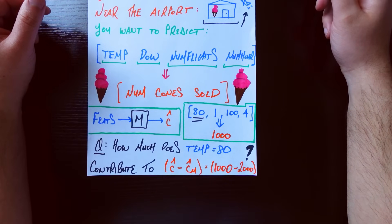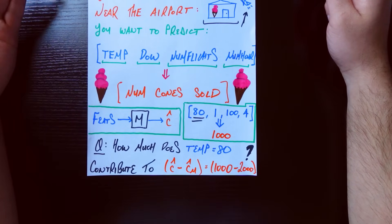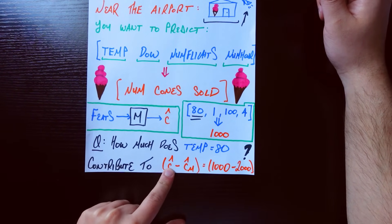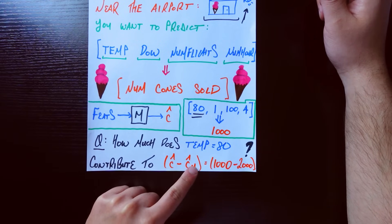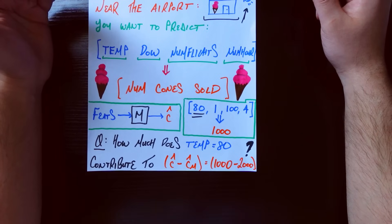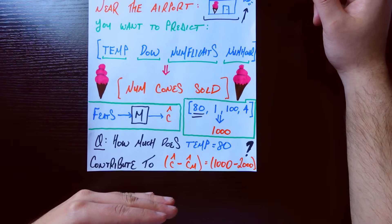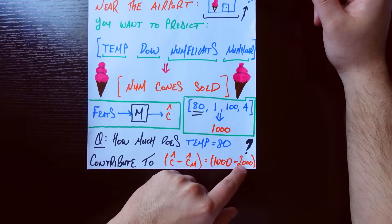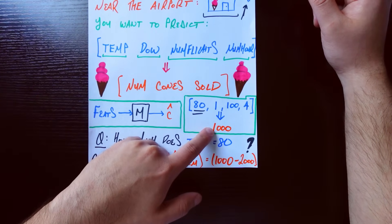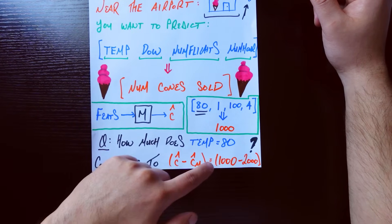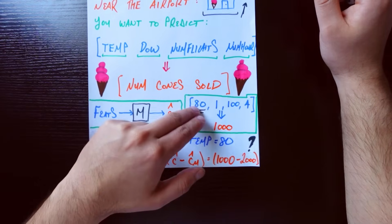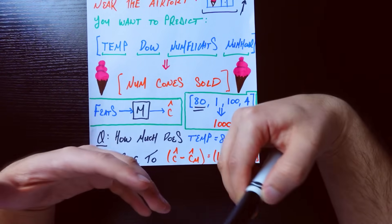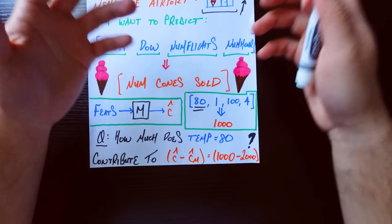Let me break that down. Let's focus on just one feature — let's say we're trying to figure out how much does the fact that temperature equals 80 degrees Fahrenheit contribute to the difference between this prediction of 1,000 and the average prediction, which let's say is 2,000. There's some underlying dataset behind the scenes used to train this model; if we run it on every sample in that data frame, the average predicted cones is 2,000. So where is that discrepancy of negative 1,000 coming from? Each feature is partially responsible, and we'd like to know how much responsibility each one claims for that difference.